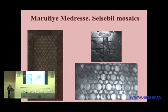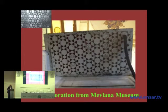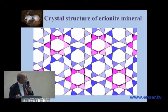In this aspect, the mosaics from Mardin Marufiya Madrasa are interesting. This pattern, also seen in Konya Mevlana Museum — Mevlana mausoleum — is just the same as the crystal structure of aionite mineral. This is the crystal structure of the aionite mineral, and you see it is the same as the ornament — the same pattern in Mardin and in Konya. This mineral, which also exists in Turkey, is known to cause mesothelioma asbestosis.